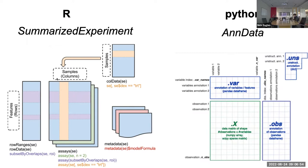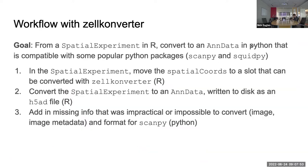Each of the values is typically counts, and you can have multiple assays — raw counts, log counts, whatever you want stored there. In the row data you'll have annotation about each of your genes, and similarly you have annotation for the columns in the column data. In Python, the AnnData class is really similar to SummarizedExperiment — you still have matrix-like data with row and column information, as well as some unstructured metadata.